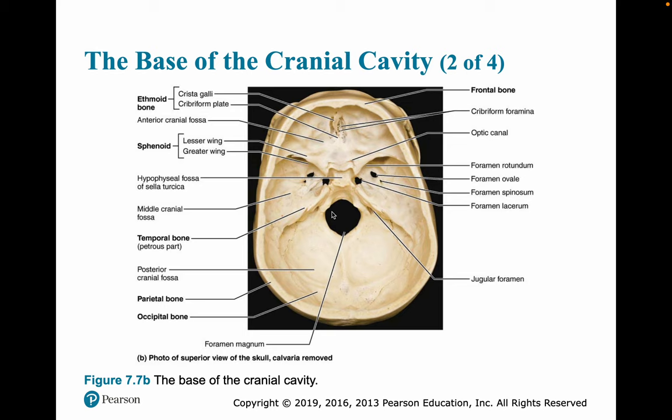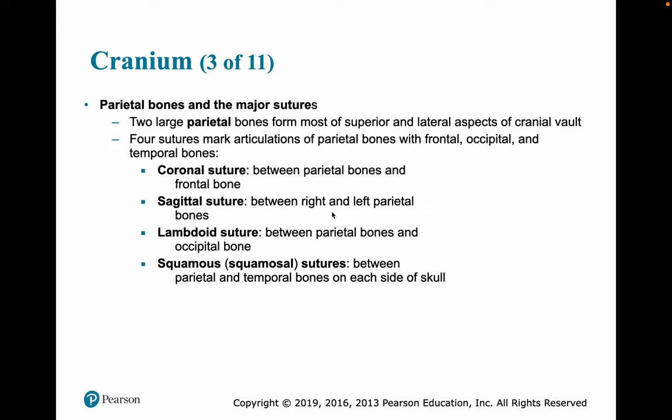The parietal bones — there are two large ones — form the most superior and lateral aspects of the cranial vault. There are four suture articulations of the parietal bones with the frontal, occipital, and temporal bones. There is a coronal suture between the parietal and frontal bones — think of a coronal section from Chapter 1, that's where the name comes from. A sagittal suture runs between the right and left parietal bones. The lambdoid suture is between the parietal bones and the occipital bone, and the squamous sutures are between the parietal and temporal bones on each side of the skull.